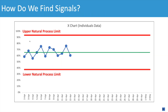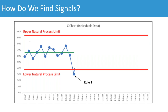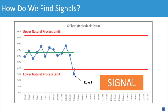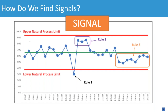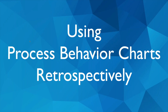How do we find signals? A signal tells us that a data point or group of data points are not likely to be randomly occurring — something has changed in the system. One signal is any data point outside the lower and upper limits; that's an appropriate time to ask why, what happened, what changed. A second type of signal is eight consecutive data points above or below the baseline average. A third rule is looking for three consecutive or three out of four data points closer to one of the limits than to the average.